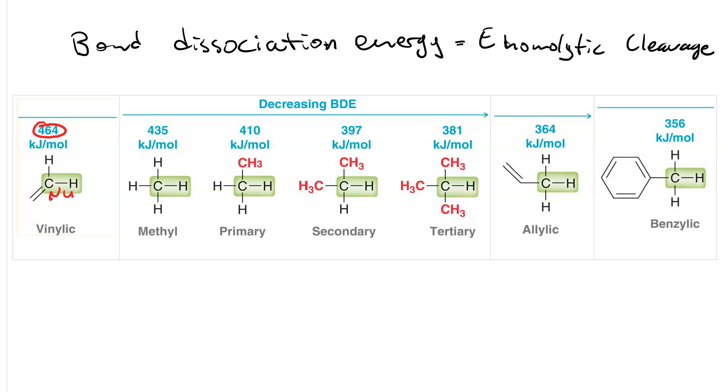Resonant stabilization of the allylic takes you down to 364. And then since benzylic has five resonance structures, that takes us all the way down to 356 kJ per mole. This is the same pattern as the stability for a carbocation.